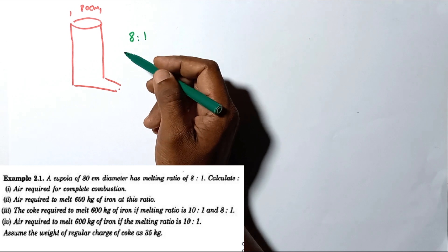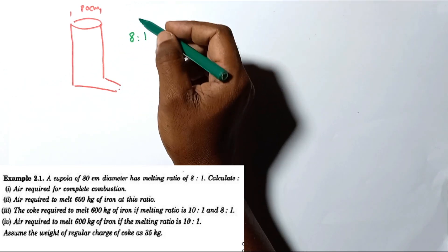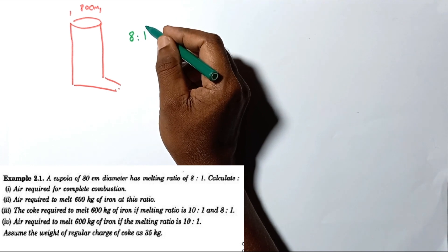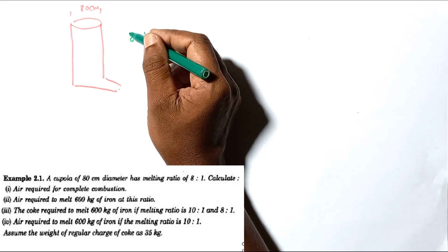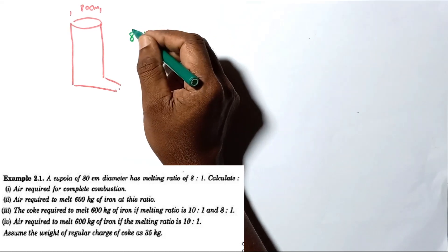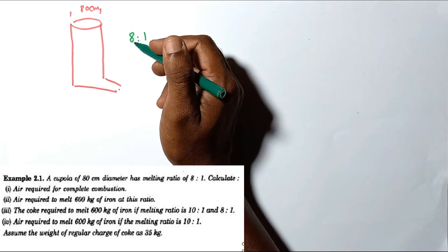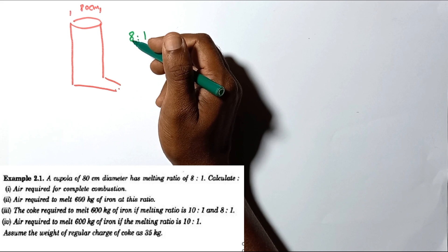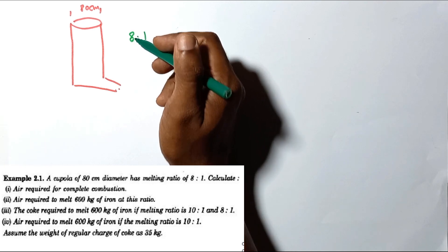An 80 centimeter diameter cupola furnace has a melting ratio of 8 to 1, meaning for 1 kilogram of coal it melts 8 kilograms of iron. The problem asks for the air required for complete combustion, assuming the weight of the regular charge for coal is 35 kilograms, and the coal purity is 88 percent carbon.